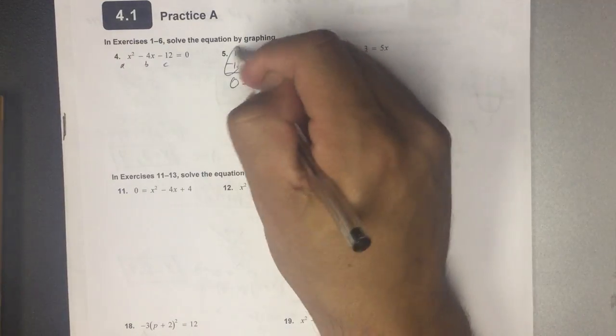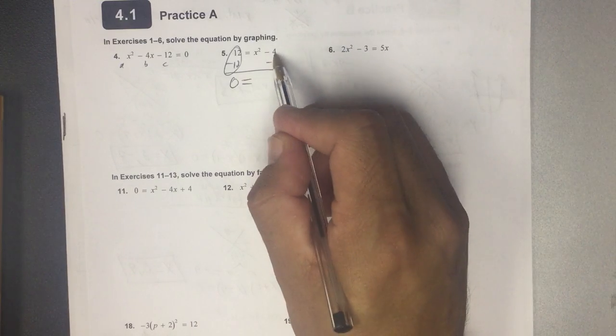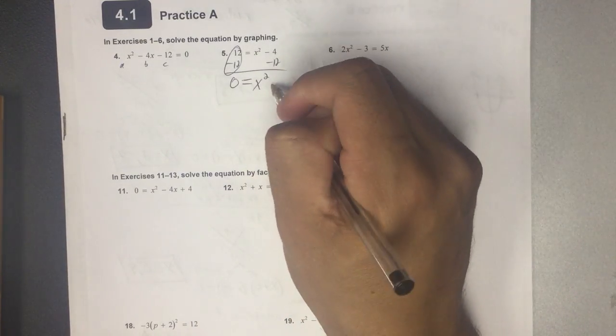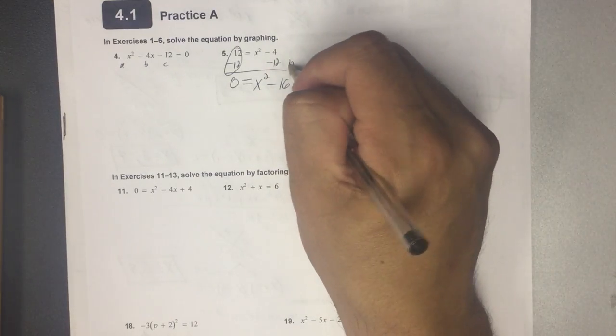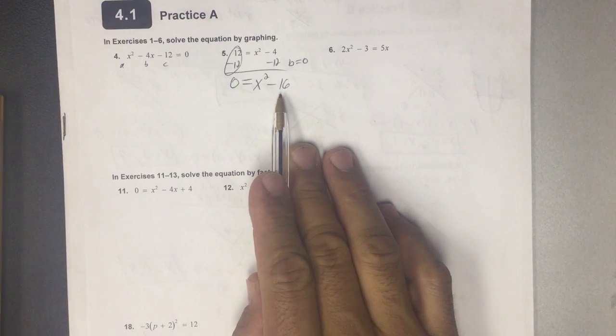You just need to know it equals 0, right? And remember that there's no x here. So this is x squared. That's minus 16. And you have to identify that b is equal to 0 because there's not an x term.